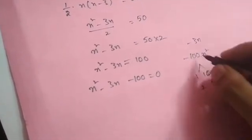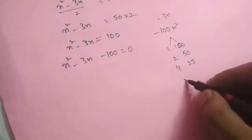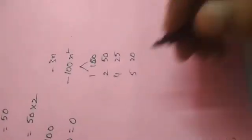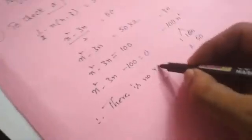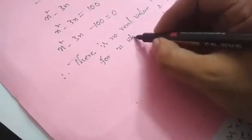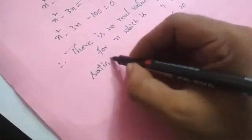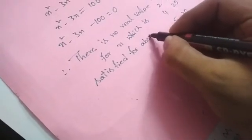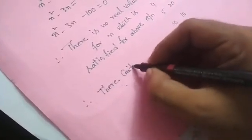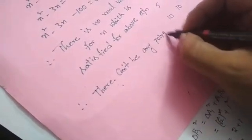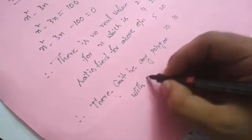Checking factor pairs of 100: (1,100), (2,50), (4,25), (5,20), (10,10) — none of these pairs give a difference of 3. So there is no real integer value of n satisfying the equation. Therefore, there cannot be any polygon with 50 diagonals.